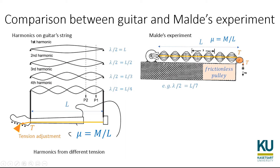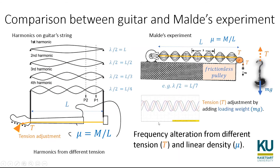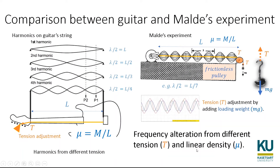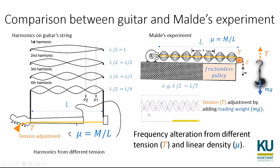The key idea of the Melde's experiment: you change the tension of the string by loading mass — like adjusting the tension of a guitar string — so that you can quantify how much tension you increase. With that, you can see the change of the wavelength lambda. By counting the number of loops, you know lambda, and using v = f·λ you can find the frequency. If you change the type of string, you change the linear density. This is the same phenomenon you can observe clearly in the Melde's experiment.